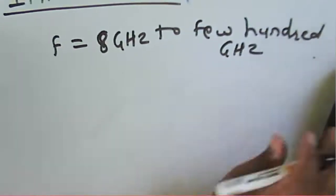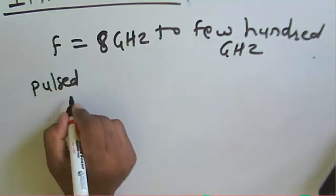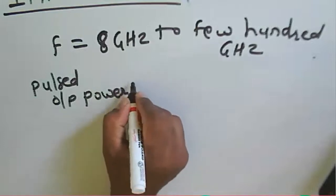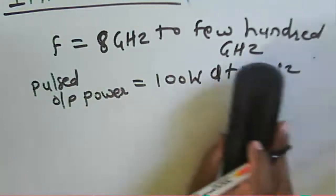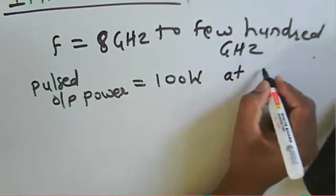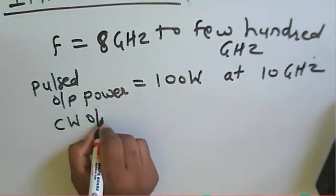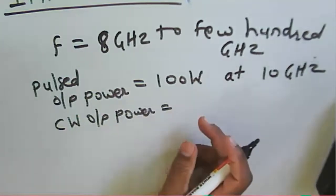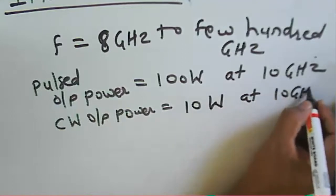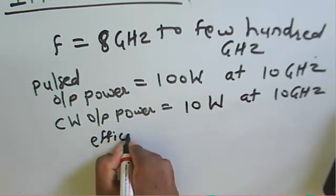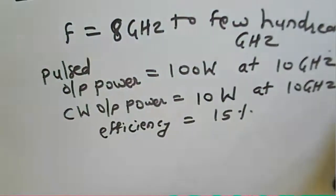The characteristics of the IMPATT diode: operating frequency range is 8 GHz to a few hundred GHz. Pulse output power is 100 watts at 10 GHz. CW output power is 10 watts at 10 GHz. The efficiency of the given diode is about 15 percent.